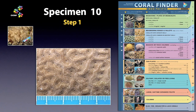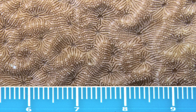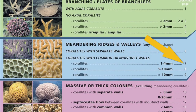Specimen 10. Here is a coral you could track down using three different key groups — meandering, massive or thick colonies, or thin plates. Given that the first thing I noticed was the subtle but clear river-like pattern in the close-up image, I'm going to try meandering. The close-up shows clear, shallow meanders, and the coralites lack distinct walls and have septocosti that flow between coralites. The coralites are small but not tiny — about 2 to 3mm across the valleys — which has me leaning towards lookalike page 7.